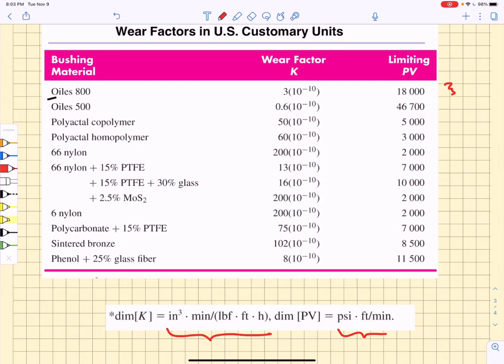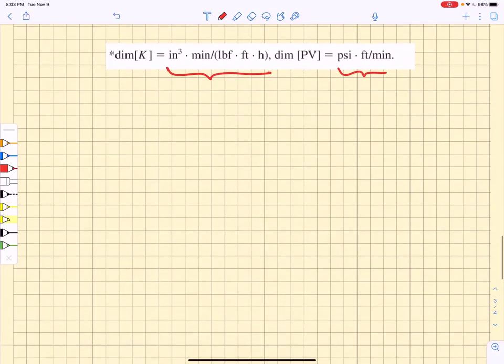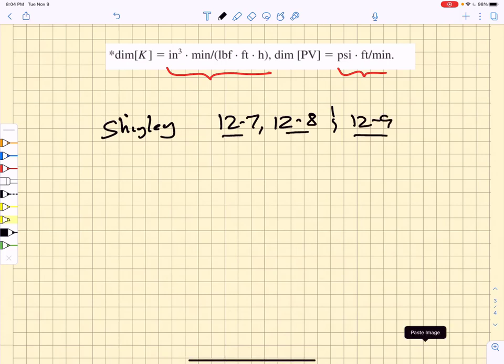I would personally rather just do it all in metric units. The tables that we end up using in the Shigley textbook are tables 12-7, 12-8, and 12-9 to help us accommodate design of bushings.